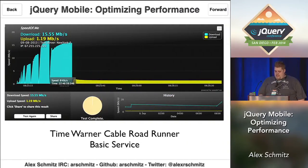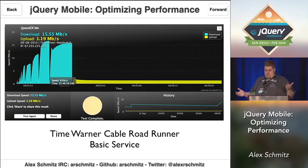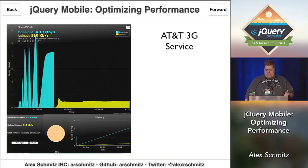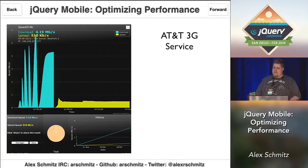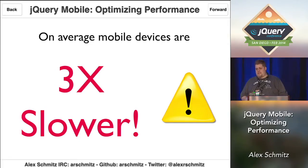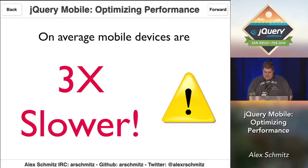When it comes to connection, this is Time Warner Cable's basic broadband — you get pretty good connection, 15 megabytes down. But AT&T 3G service is only about 4 megabytes — a huge difference in download speed when you go from regular broadband to 3G. On average you're about three times slower, so you really have to worry about performance on mobile devices.